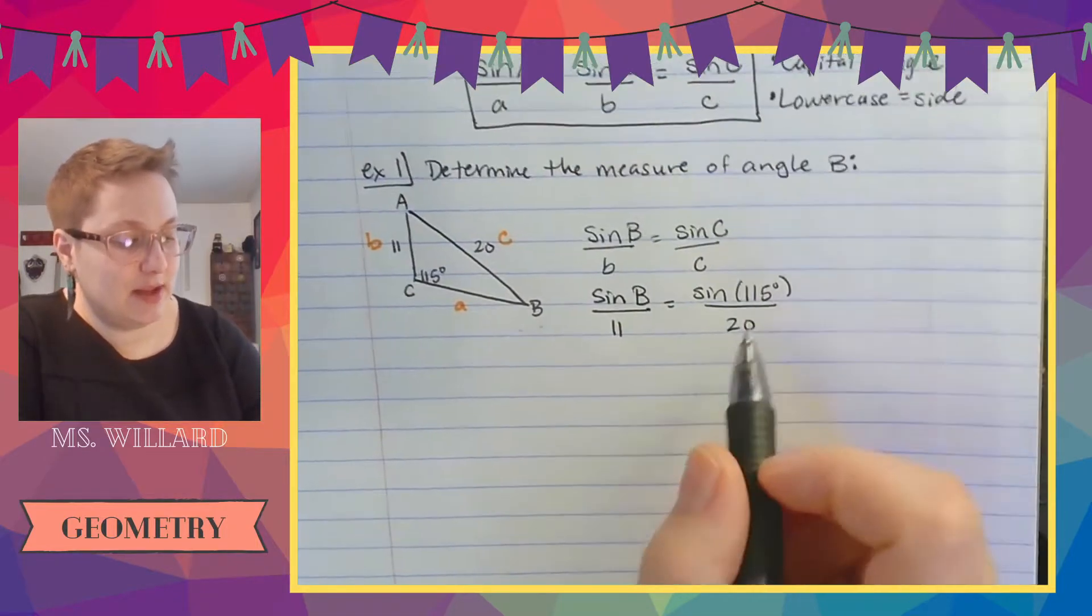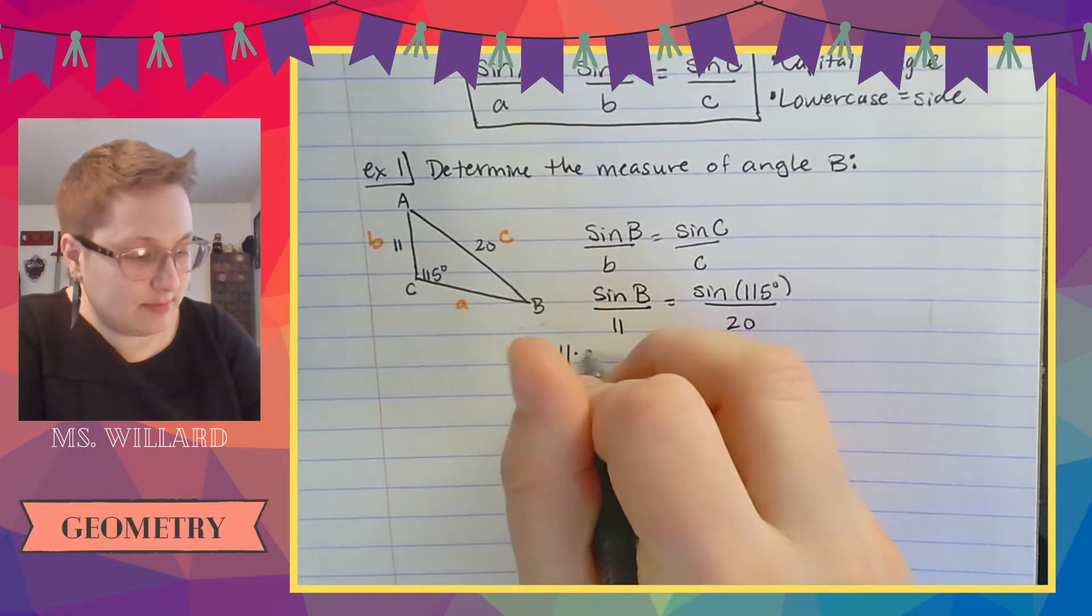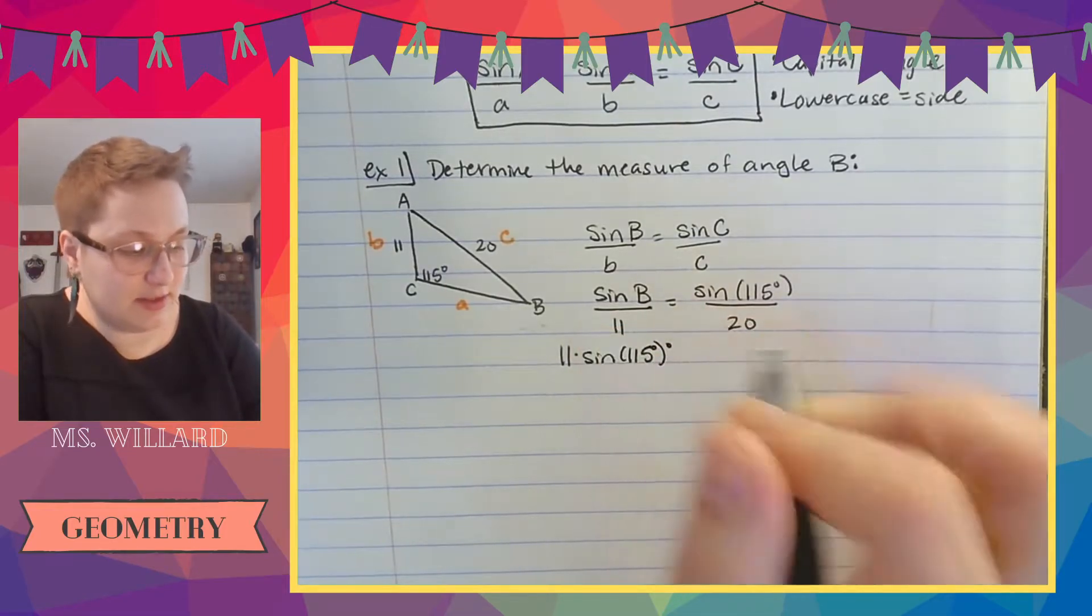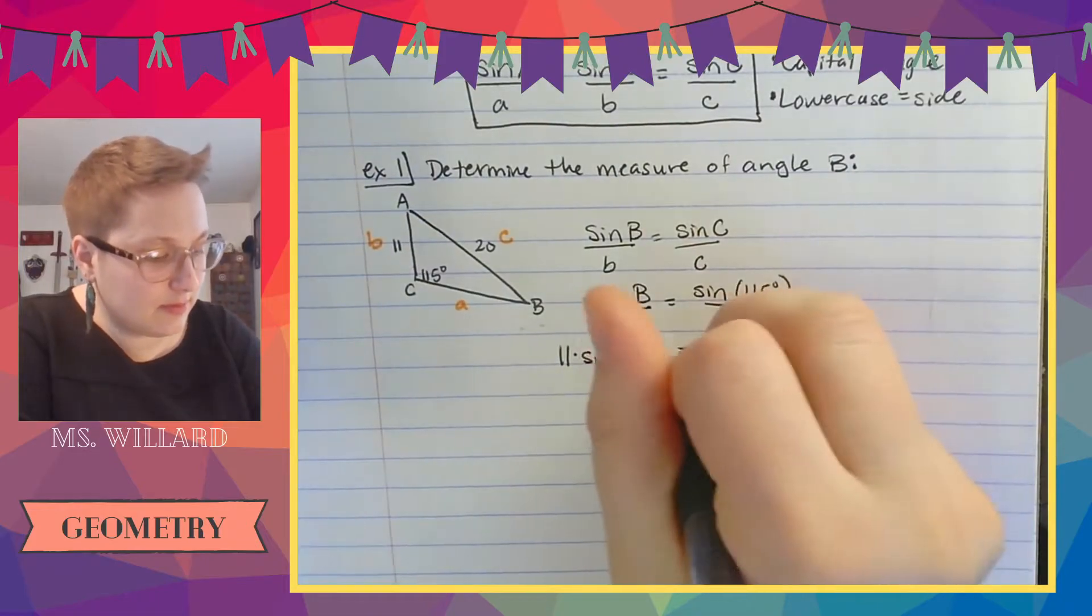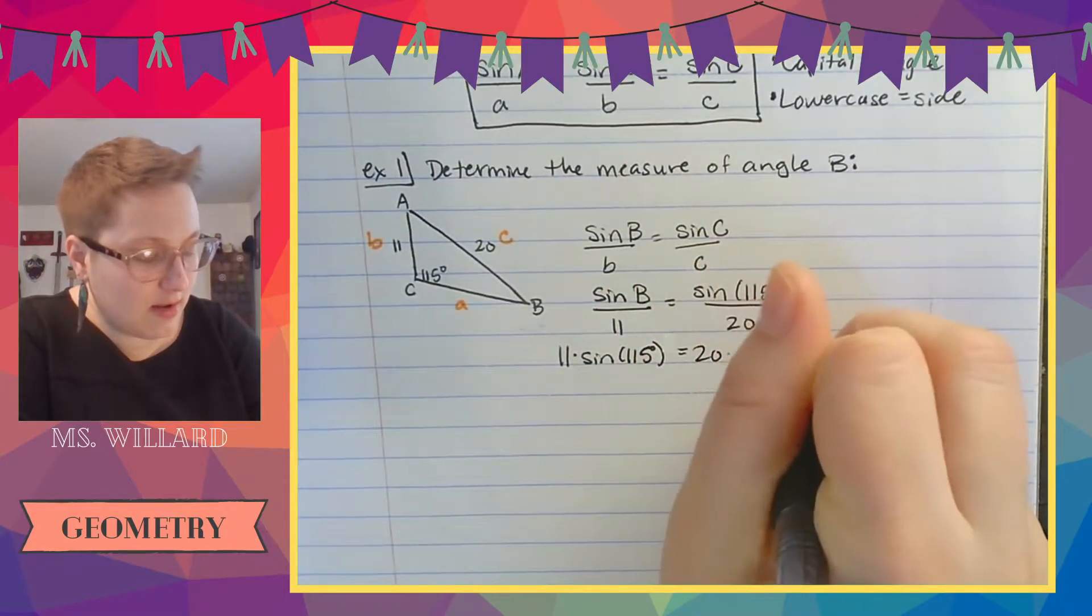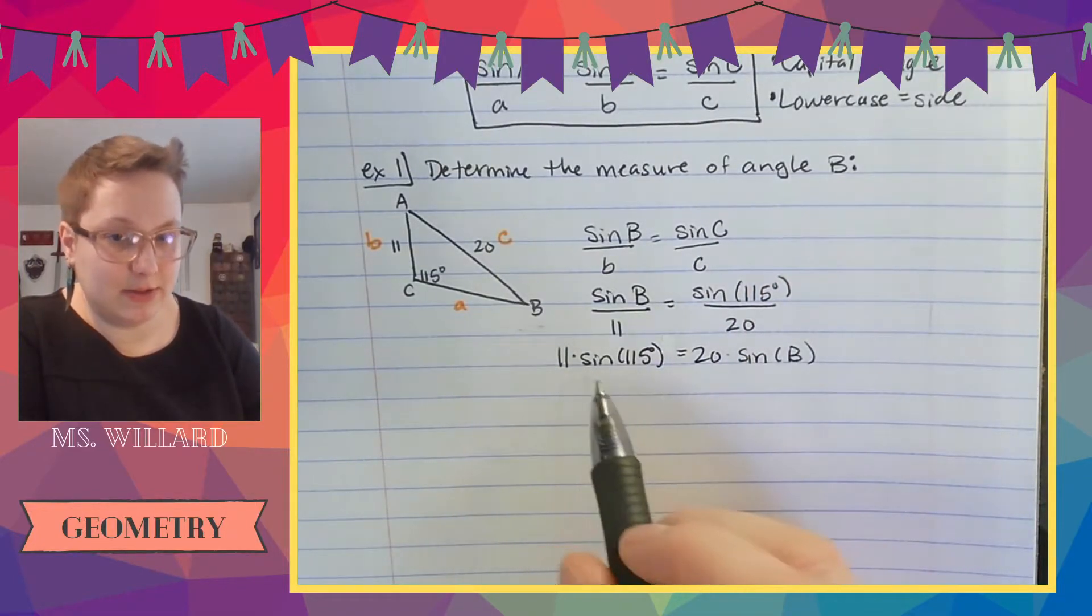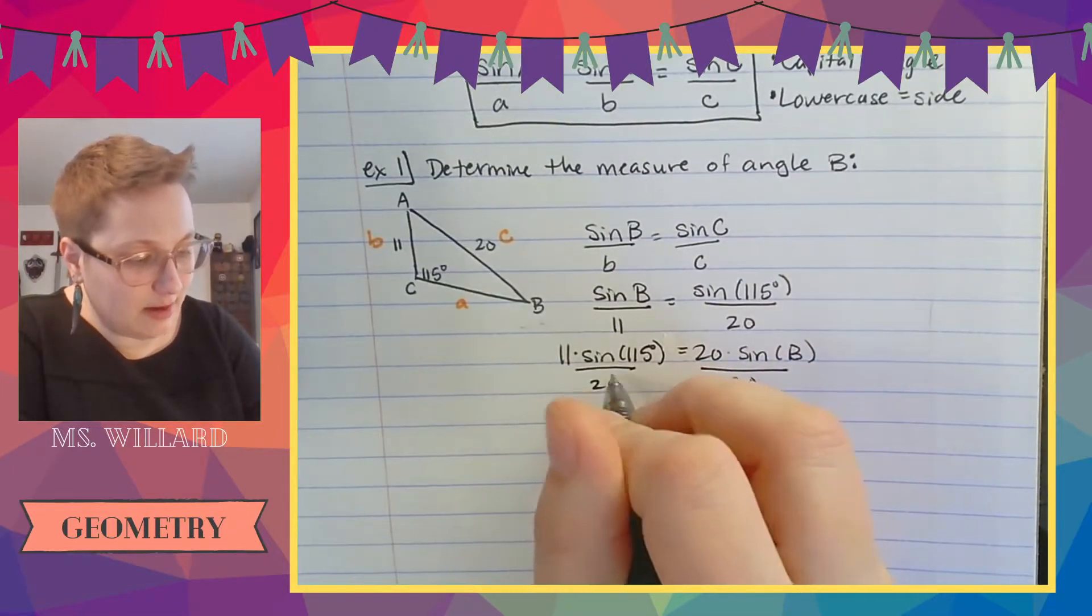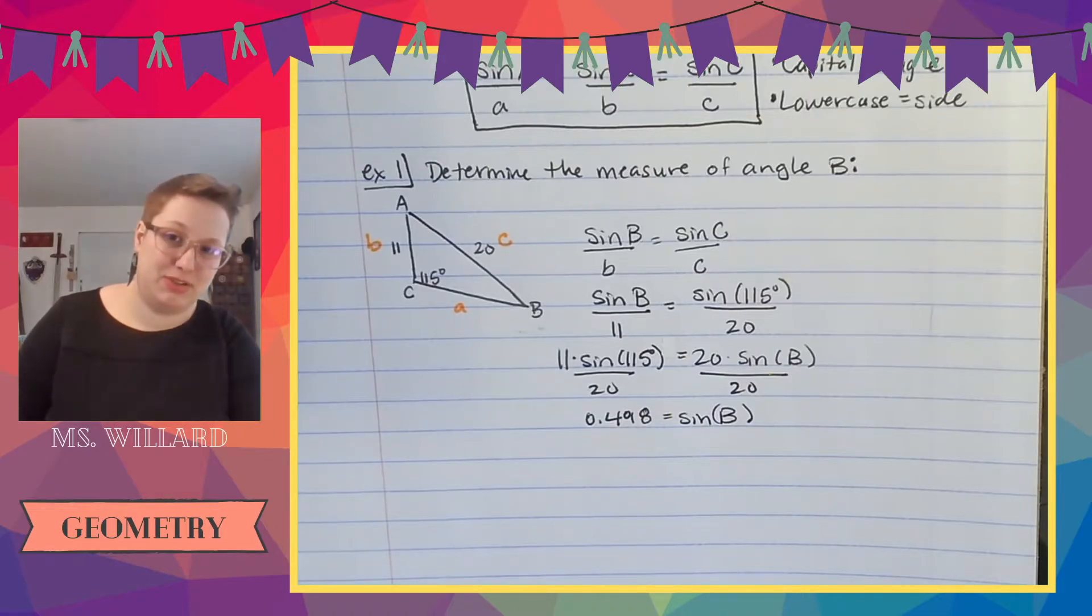I don't have to but it always works. So I'm just going to show that method to you. So I'm going to cross multiply. So I'm going to do 11 times sine of 115 degrees equals 20 times sine of b. And then I'm going to multiply this all together and then divide by 20. So I'm going to divide by 20. And I'm going to figure out what this whole thing is. So that whole thing happens to be 0.498. If you don't get that number, make sure you're in degrees and make sure you're using parentheses.